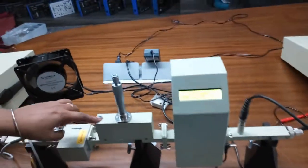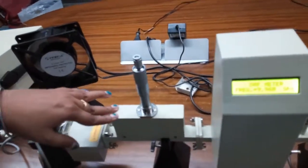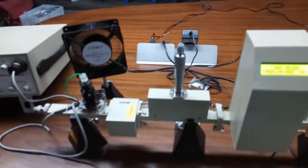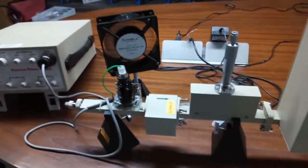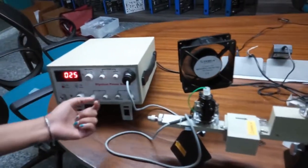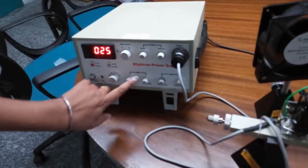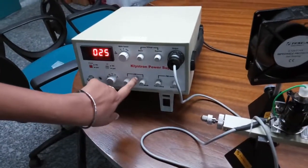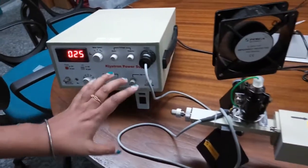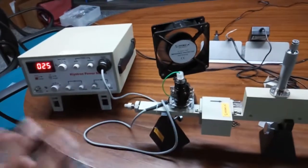First keep this variable attenuator at maximum position, that is in no penetration mode. Now with the help of this repeller voltage frequency tuner and amplitude knob of AM modulation, we will set the voltage of the output waveform at maximum value.